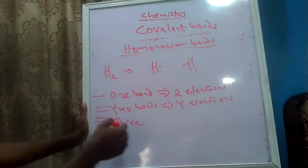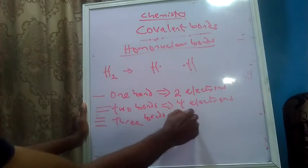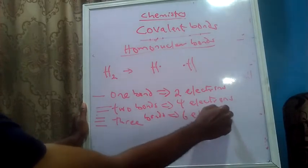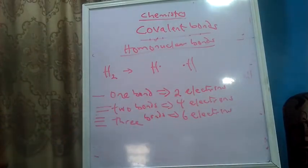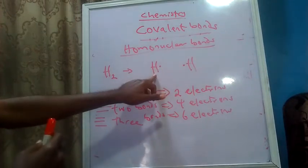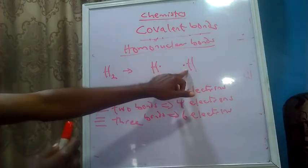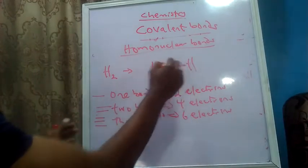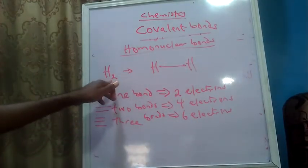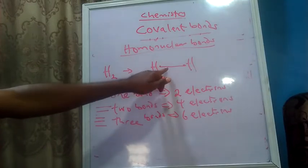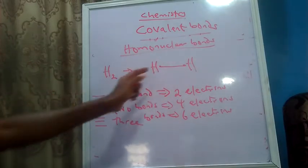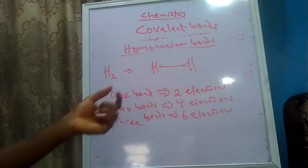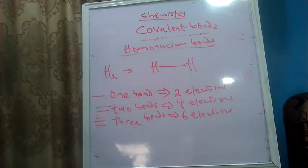Three bonds represent six electrons, so you're going to see examples of how all of this plays out. This is one electron from one hydrogen atom and another electron from the second hydrogen atom, making two electrons. They are going to combine to form a single bond — this is how the H2 molecule is formed. This is a covalent bond, formed by the sharing of electrons.